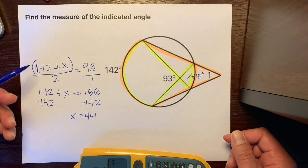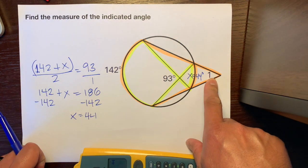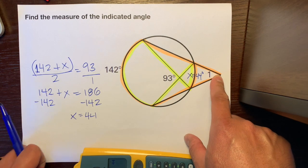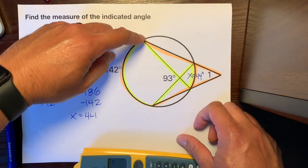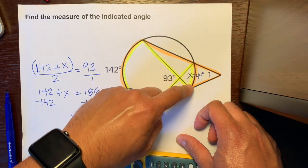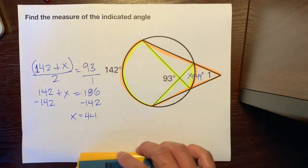Now we have everything that we need to figure out what the measure of this angle is that intersects where its vertex is on the outside. Because now we have the far arc, the near arc, and we're trying to figure out what that angle is.